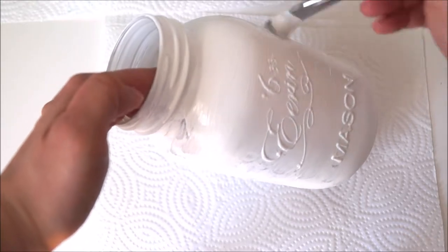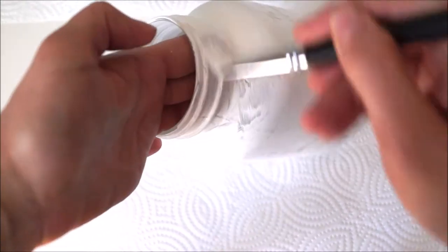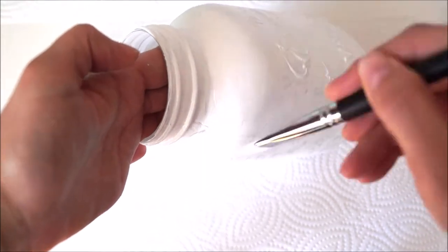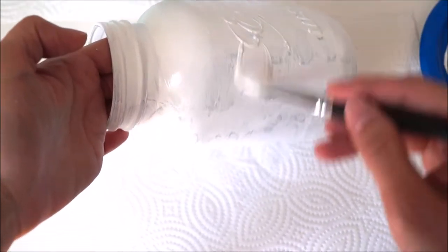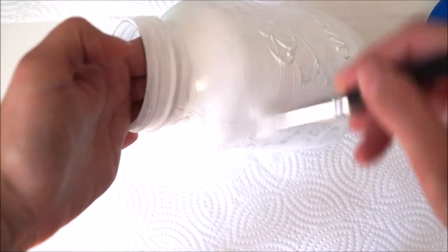What's nice about this project is that you can actually use any jar or vase that you would like. Even a bottle of wine. Simply paint it and follow the same steps to get the same effect. It doesn't have to be necessarily a mason jar.